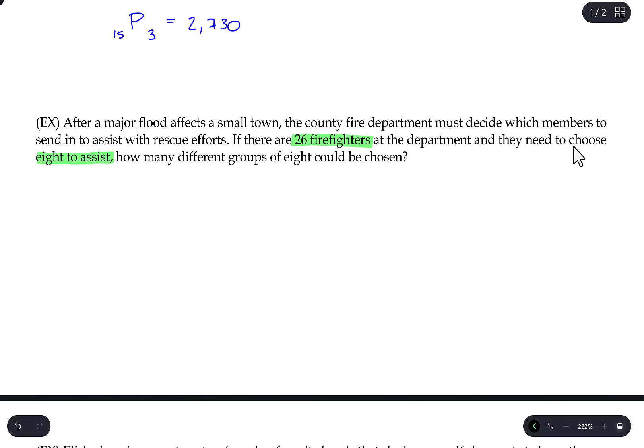So first you'll know that you're doing a question involving counting rather than probability because it will always say how many different ways, how many different groups, like how many different something or another. So that means you'd be using either the fundamental counting principle or permutations combinations. In this case we have one group of items. So we have the 26 firefighters and out of that group we're picking eight to assist with the rescue efforts. So we're picking multiple items from a single group. So that's either a permutation or a combination.